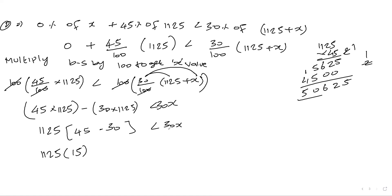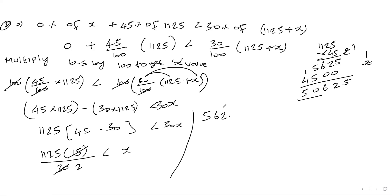So 15 divided by 30 simplifies, and 1125 divided by 2 equals 562.5. Therefore x is greater than 562.5.